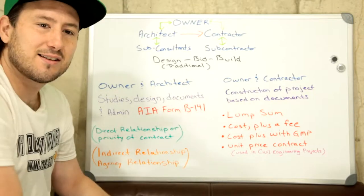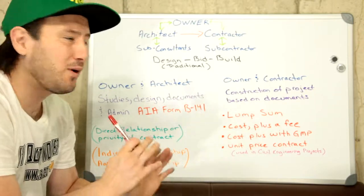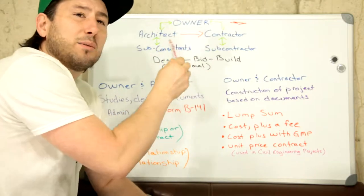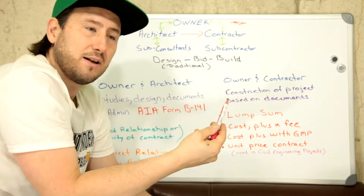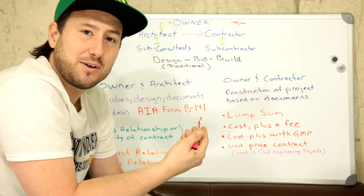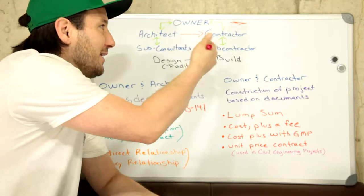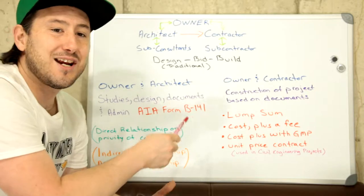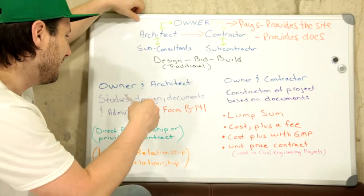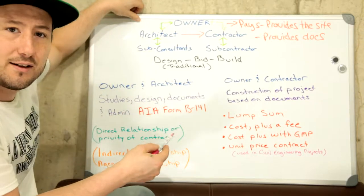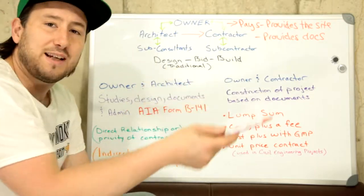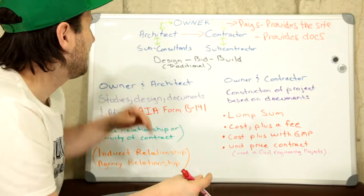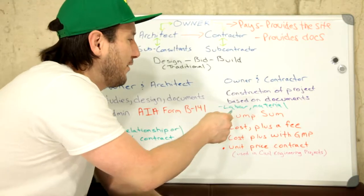It's been around since the late 1800s and is the most popular, widely used contract still even today. The owner will supply the site for construction and will also provide the contractor with the documents, which outline the entire project. The architect administrates the contract as an agent for the owner, providing the design and the construction documents, administrating the construction process, and also providing clarifications to the contractor on those documents.